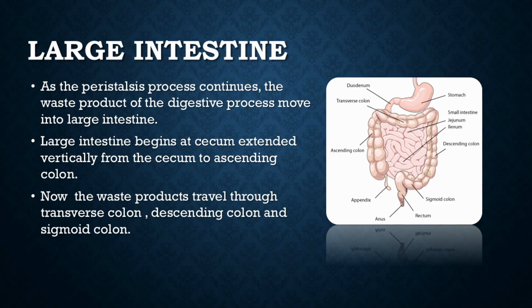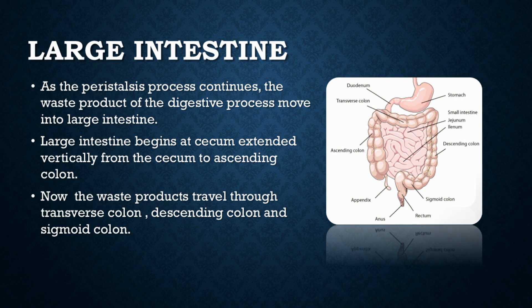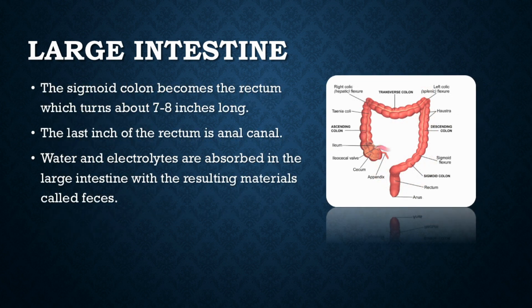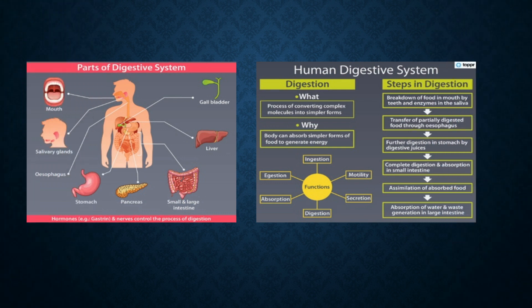Large intestine. As the peristalsis process continues, the waste products of the digestive process move into the large intestine. The large intestine begins at the cecum and extends vertically through the ascending colon. The waste then travels through the transverse colon, descending colon, and sigmoid colon. The sigmoid colon becomes the rectum, which is about 7 to 8 inches long. The last inch of the rectum is the anal canal. Water and electrolytes are absorbed in the large intestine, and the resulting material is called feces.